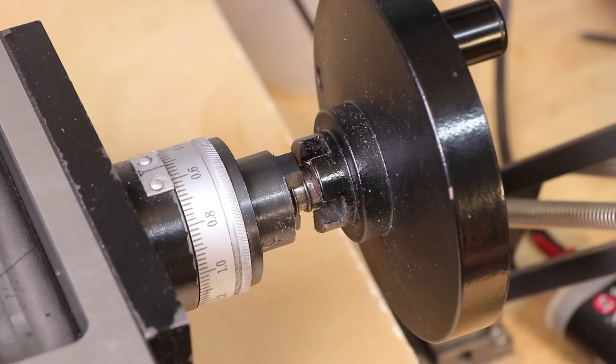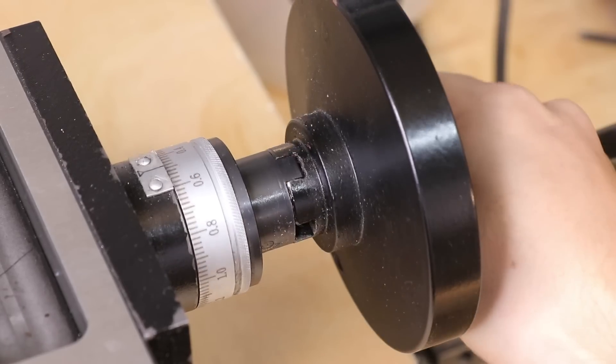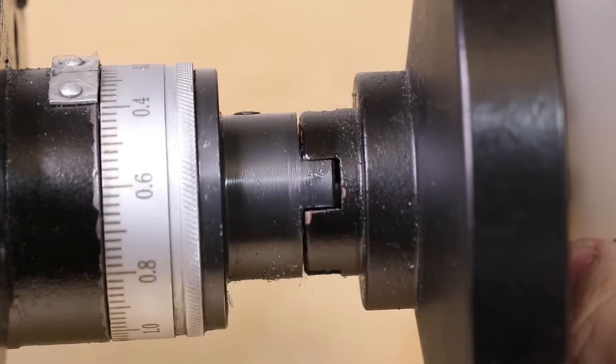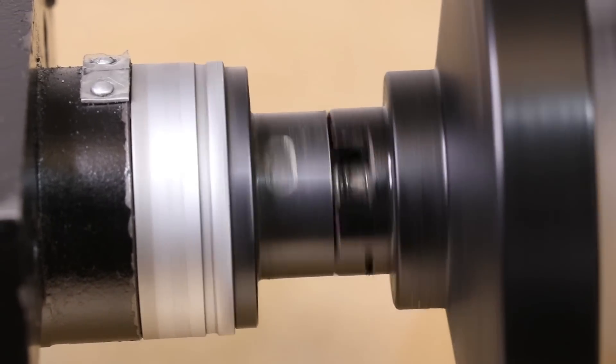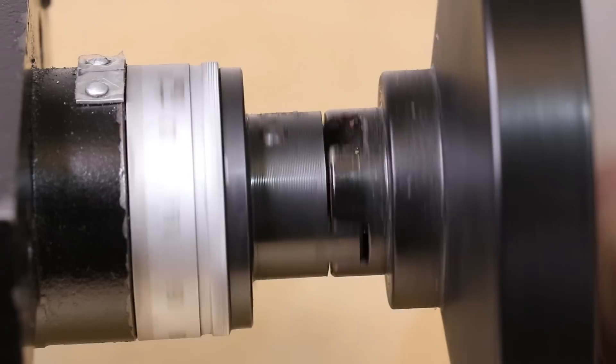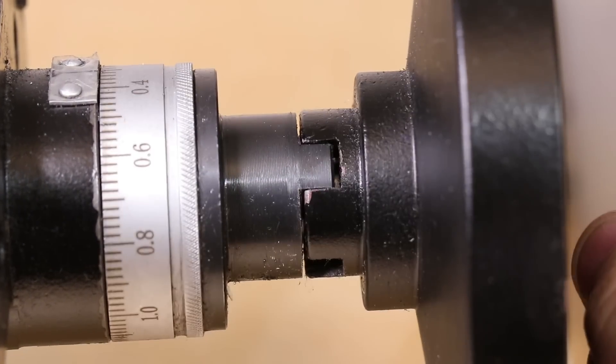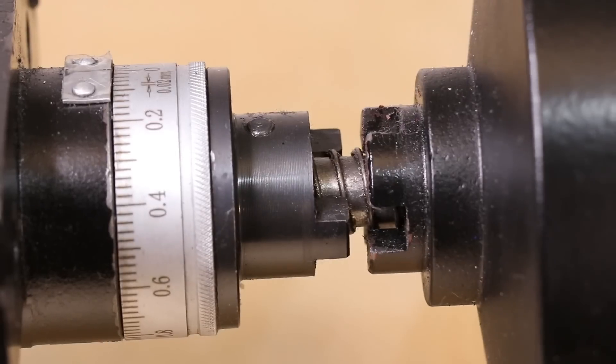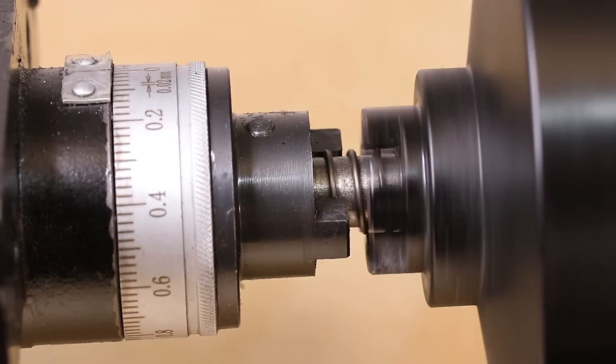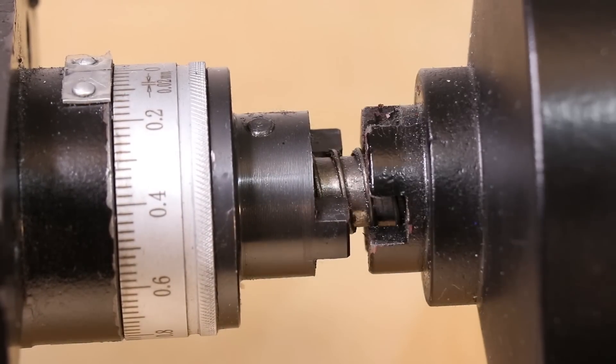Interestingly though, the longitudinal handwheel has a spring-loaded dog clutch, meaning you need to push the handwheel into the clutch to engage it. I was a little bit confused at first, but I eventually realized that this is done, so in the event of you getting an auto-feed, the handwheel won't spin when you're auto-feeding, which is a pretty smart solution.